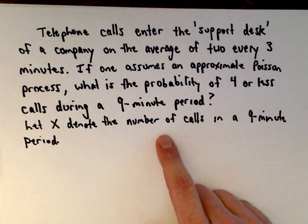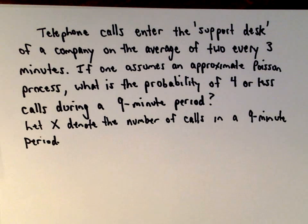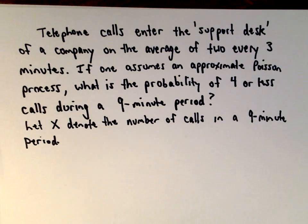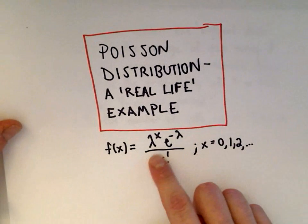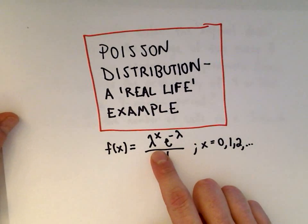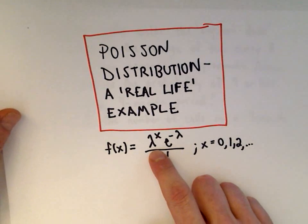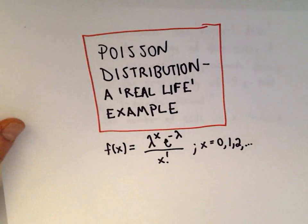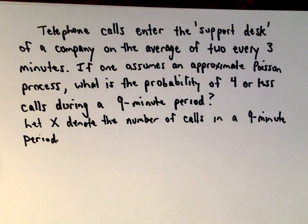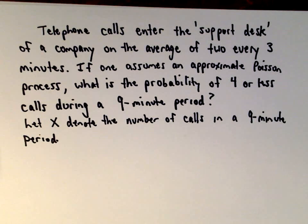We're going to let x denote the number of phone calls in a nine-minute period. We'll also talk about what the value of lambda represents in this Poisson distribution and how to compute lambda — something very important for these types of problems, but also very easy to do.